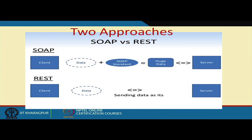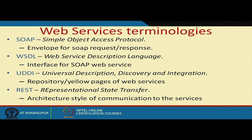There are two broad approaches people adopt for web services. One is called the SOAP protocol and another is the REST protocol. In the SOAP protocol, the data plus the SOAP standard is transported over the internet to the server. Because it contains both data and the standard, this makes the data file a little larger and consumes more bandwidth. REST is a simpler principle that works over HTTP — it simply transfers the data as an XML or JSON file to the server without that extra overhead. Therefore, many companies nowadays adopt REST.